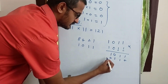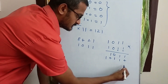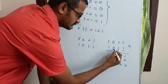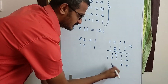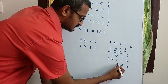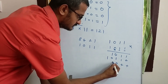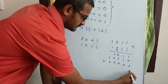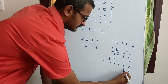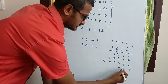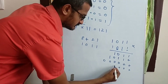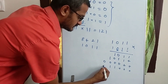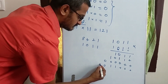Now we perform normal multiplication. We are going to add the bits. 0 into anything is 0, so the first partial product is 0 0 0 0. For the last bit, 1 into 1 is 1, 1 into 1 is 1, 1 into 0 is 0, 1 into 1 is 1.